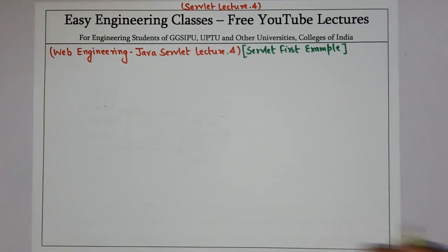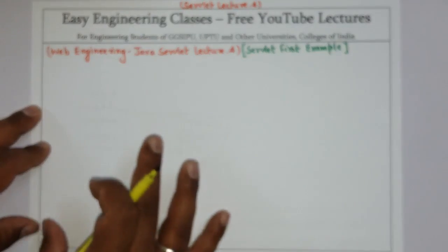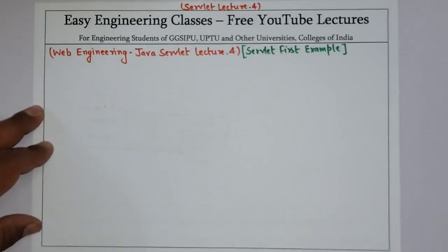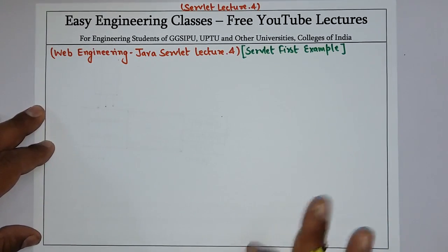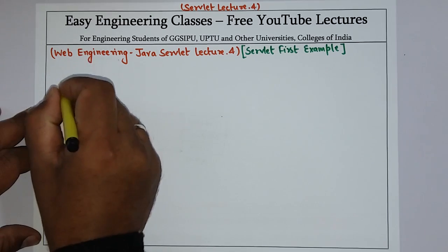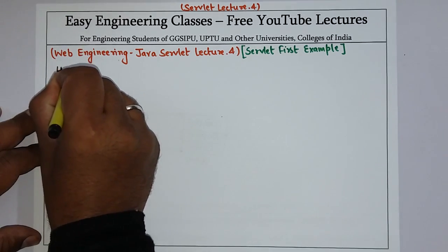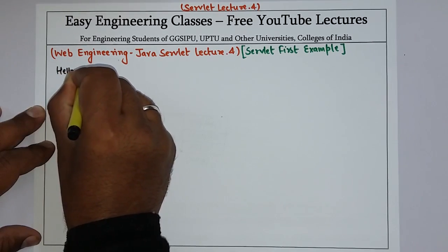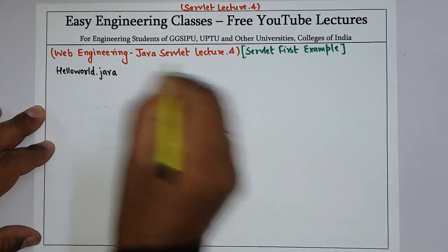In the first example we will be printing Hello World using a servlet. First I will be writing the Java code, and then we will see how the mapping is done with the help of a web.xml file. Let's name the Java file as HelloWorld.java.